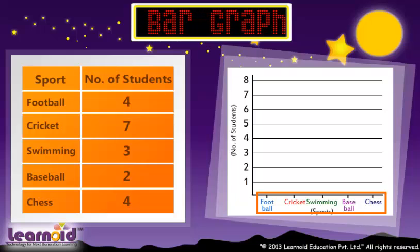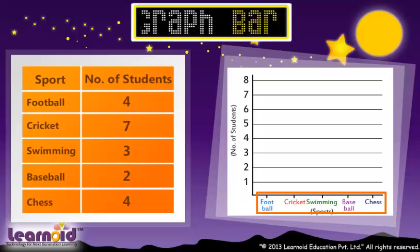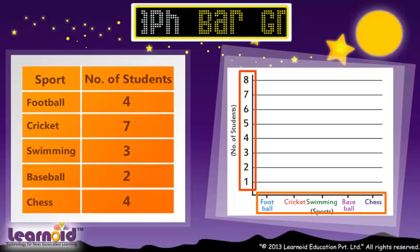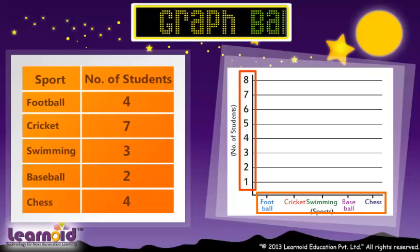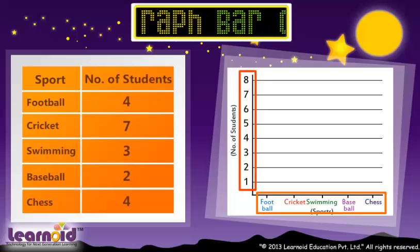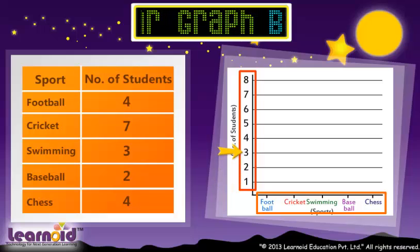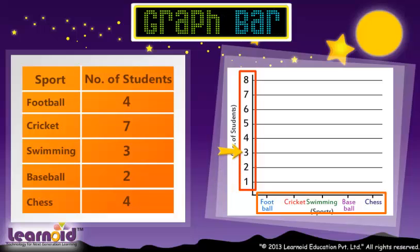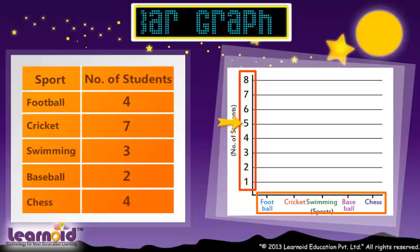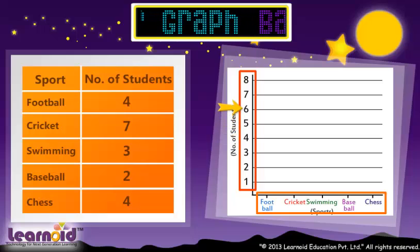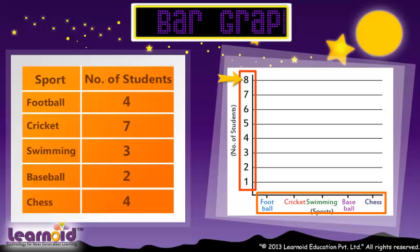The maximum number in the list is 7. So we will mark equal divisions on the vertical line: 1, 2, 3, 4, 5, 6, 7, 8.